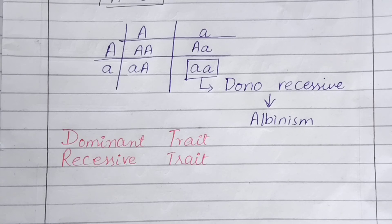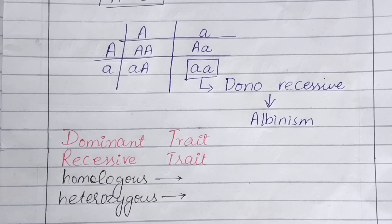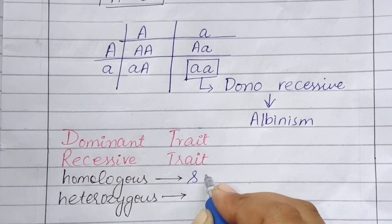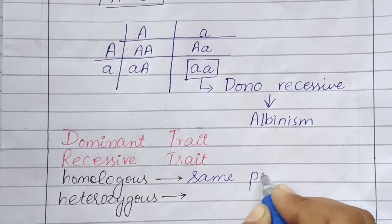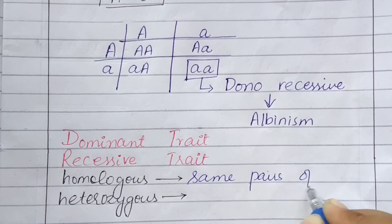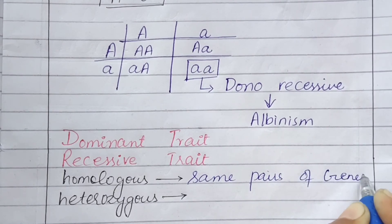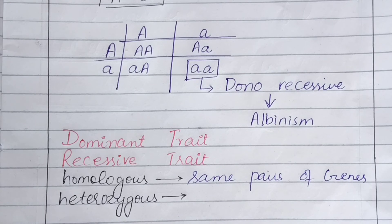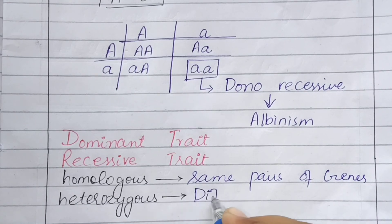The recessive trait is masked by the dominant trait, and curly genes or characters appear dominant. If we talk about homozygous and heterozygous — homozygous means the same pair of genes, same pairs of genes. If we talk about heterozygous, we have different pairs of genes.